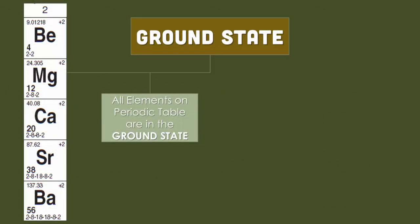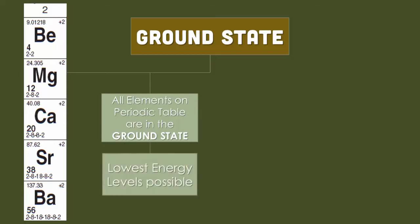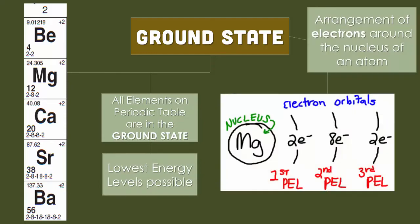Ground state is found on the reference tables, as we just said. All elements on the periodic table are in ground state, so they're in their lowest possible energy levels.